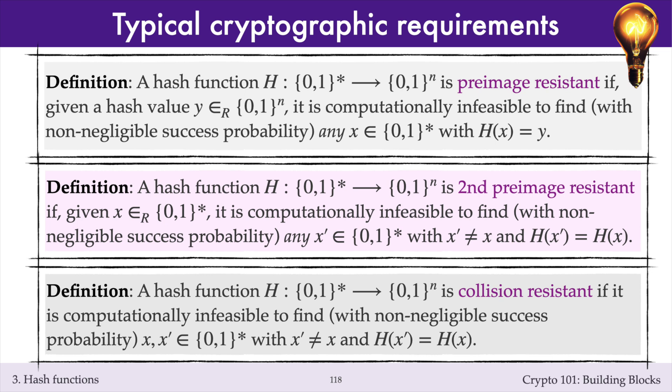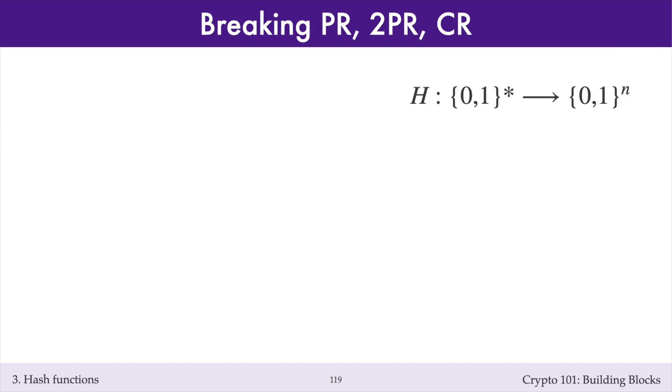Please take the time to review the three main security properties of hash functions: pre-image resistance, second pre-image resistance, and collision resistance. From the definitions, we can concisely state what it means to break the pre-image, second pre-image, and collision-resistant properties of a hash function h.